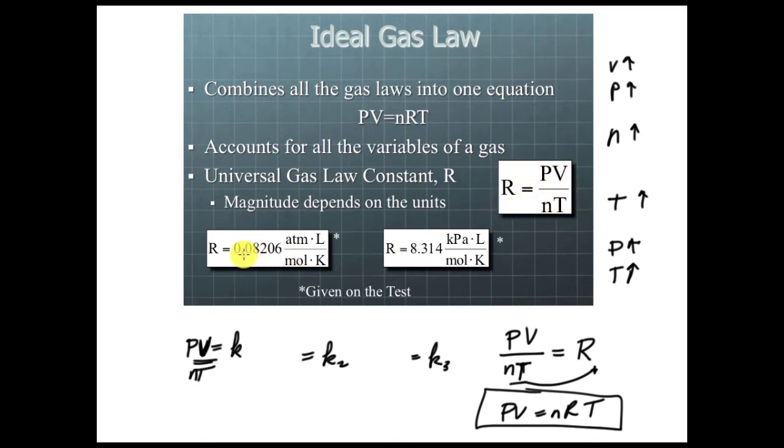What is the universal gas constant? Here it is right here. There's two different values because your units can change. You can either use this in atmospheres and liters. That would be pressure, atmosphere, volume in liters. Obviously n is in moles, and your temperature is in Kelvin.